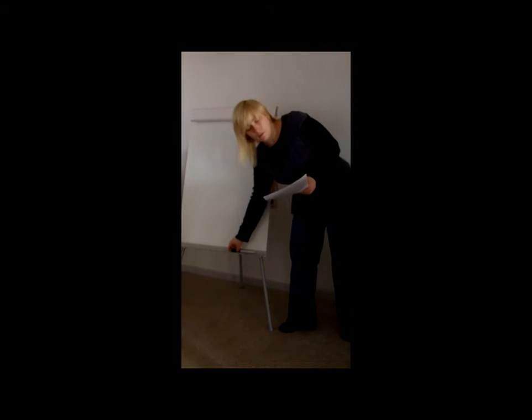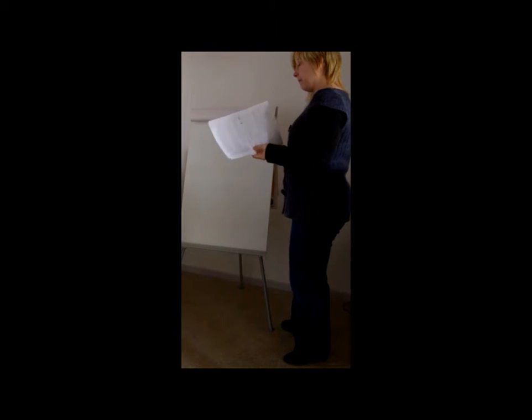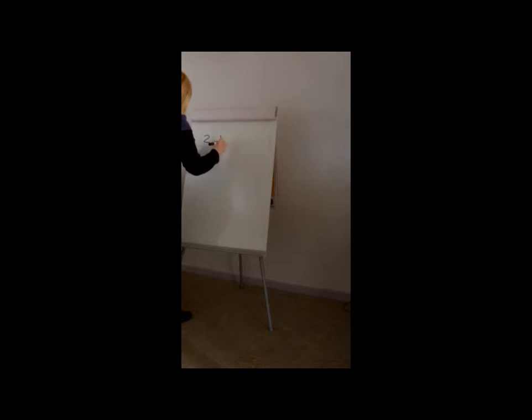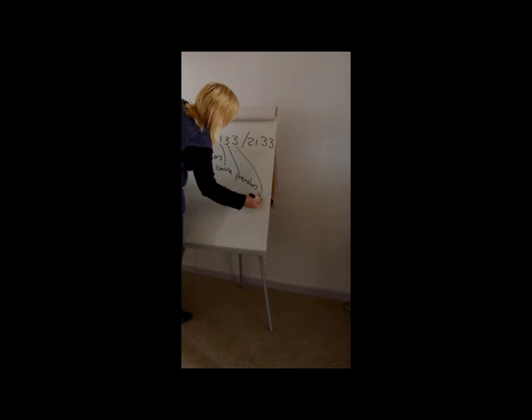So the typical dental formula for a new world monkey would be 2, 1, 3, 3 over 2, 1, 3, 3. So this basically means 2 incisors, 1 canine, 3 premolars, and 3 molars. And that would be repeated for the other side of the same jaw as well.